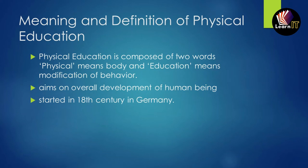Physical education is composed of two words: 'physical' means body, and 'education' means modification of behavior. It is education through the medium of physical activities, and it aims at the overall development of human beings through participating in various games and sports activities. Modern physical education was started in the 18th century in Germany, where it was a very integral part of the school curriculum.